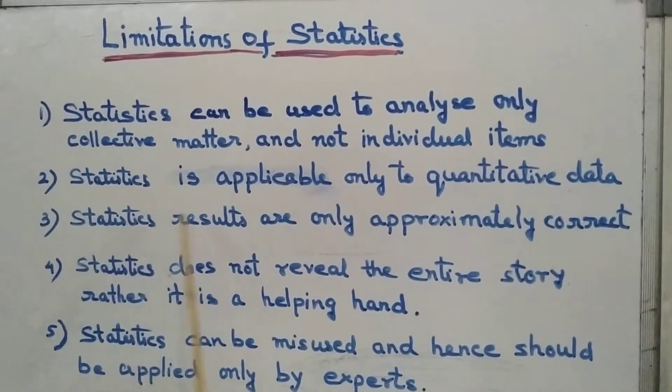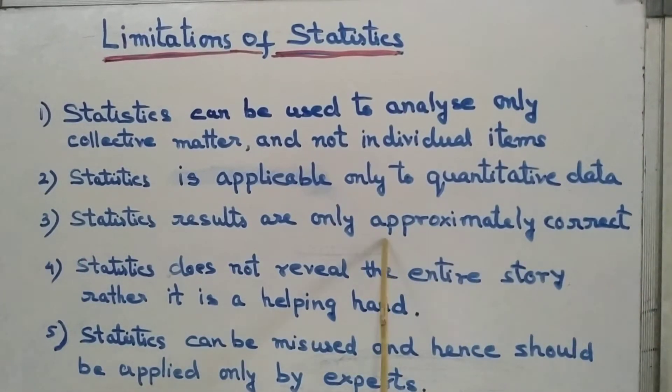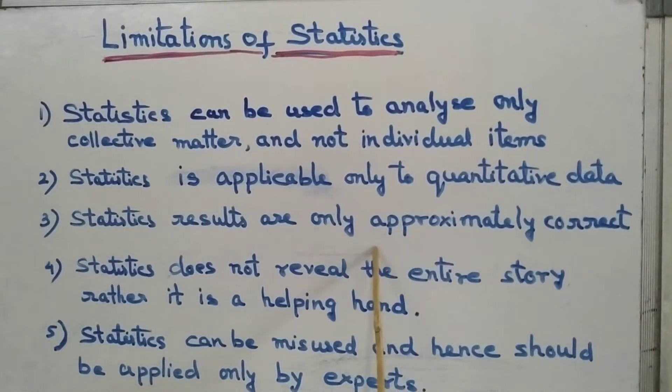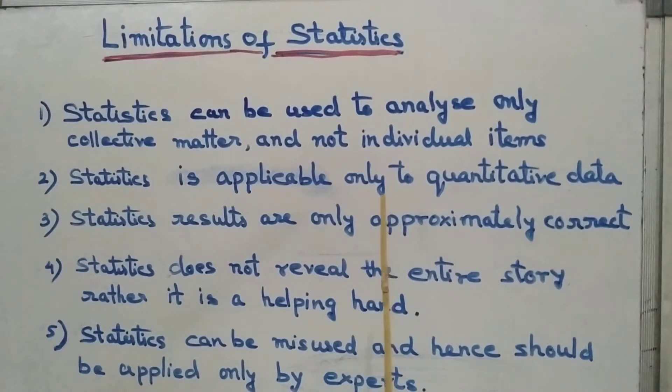Then, statistics results are only approximately correct. Whatever result we get or whatever prediction we do from the statistical methods, that are approximately correct, not exactly correct. On an approximate basis it is correct.